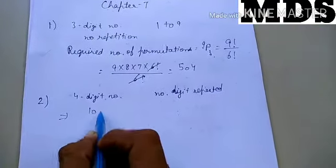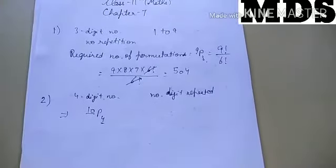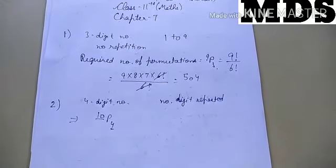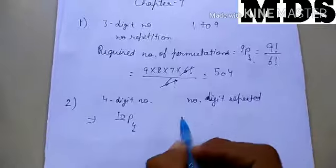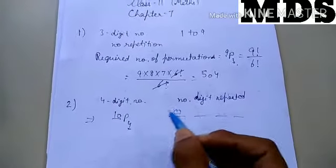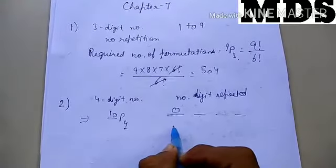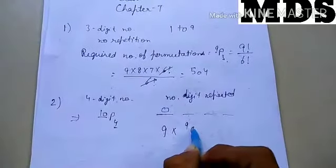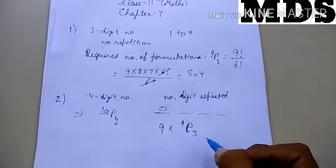We start by taking 10P4 since total 10 digits are available. But it is also possible that we get a 0 in the first place, which we do not want. So that case will reduce our count. For the first place, we can use 9 digits, and from the remaining 9 we will take 3, giving 9P3.